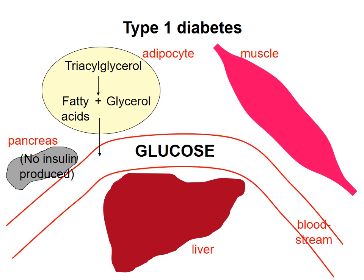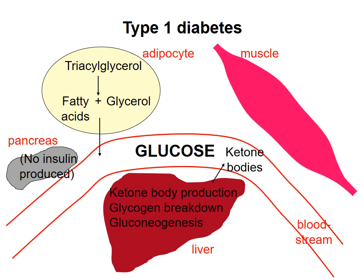Fatty acids are released from triacylglycerol. In the liver, glycogen breakdown, gluconeogenesis, and ketone body production are favored. Glycogen breakdown also occurs in the muscle. High levels of ketone bodies in the blood cause the blood to become acidic. Glucose levels remain high in the blood, which can lead to complications such as undesirable glycosylation of proteins in the eye and nerve damage in extremities.